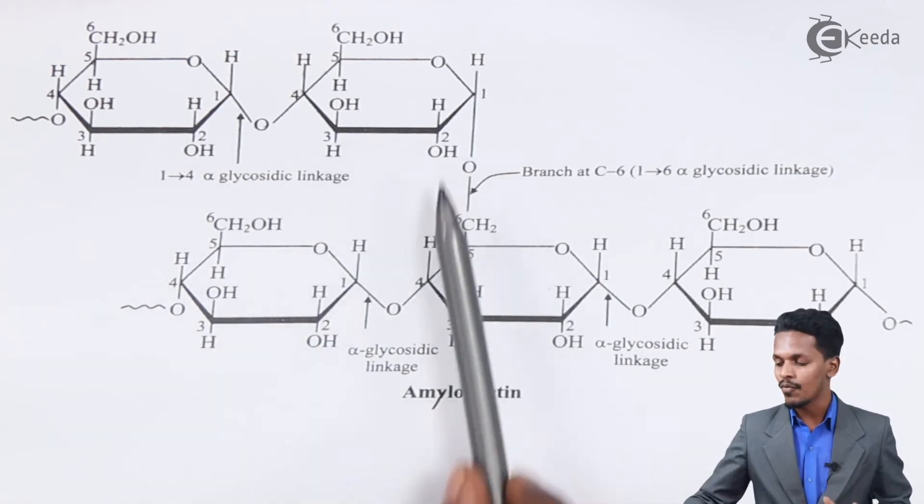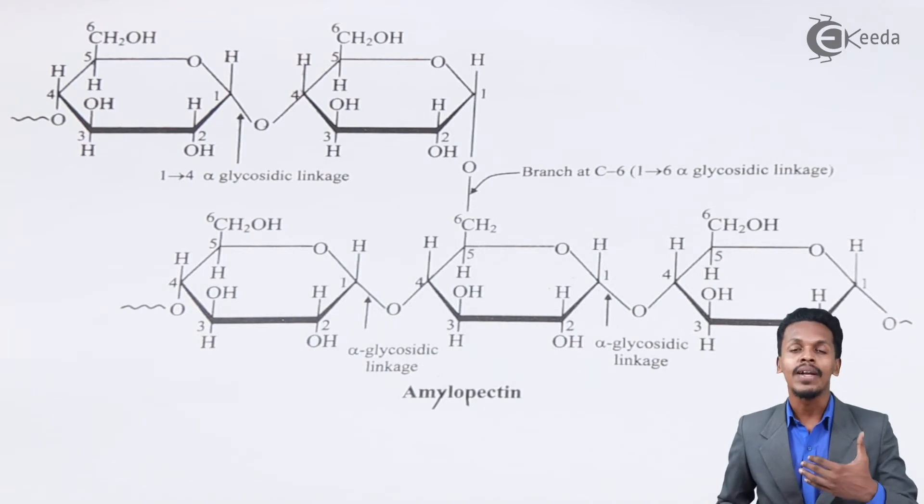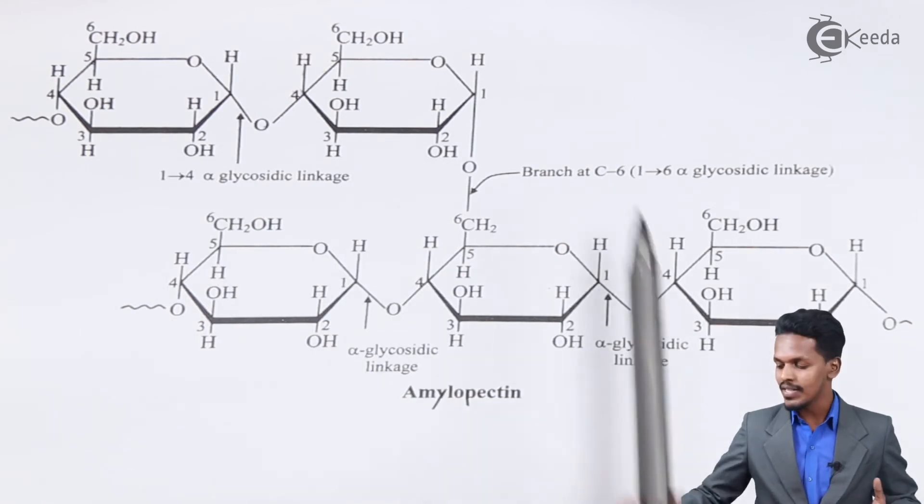Branching occurs at several intervals. The only difference is we find branching after several units. So therefore, this is the structure of amylopectin.